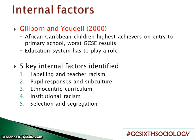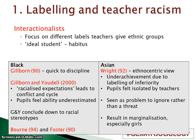From this, sociologists have identified five key internal factors. The first one is labelling and teacher racism. This is an interactionist ideology — think Howard Becker et al. — and they are interested in face-to-face interactions between students and teachers. They believe that teachers apply very different labels to different ethnic groups, which could come from the habitus they hold and their conception of an ideal student. Because children from ethnic groups don't fit those characteristics, teachers attach negative labels to them.